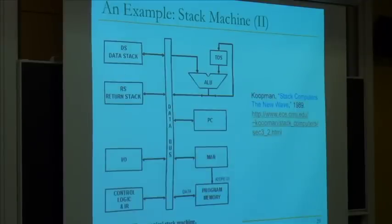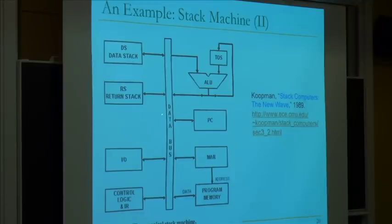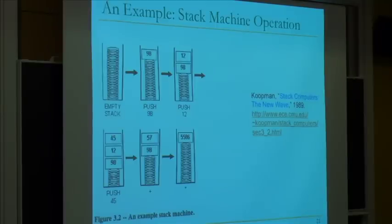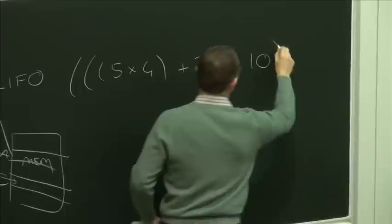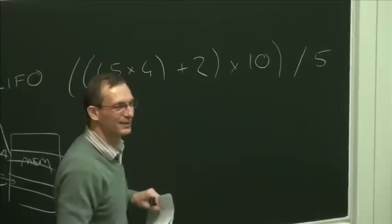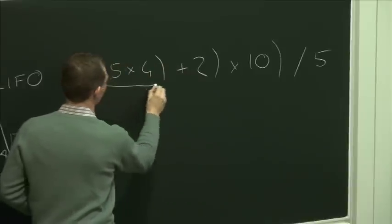This is an example from Phil Koopman's book — a professor here — which is online. This was considered the new wave in 1989. A stack machine processor has a data stack, potentially with the top of stack cached for faster operation, and program memory. Operations can be expressed as postfix: for example, 5 * 4 + 2 * 10 divided by 5 has a natural ordering for pushing values onto the stack.